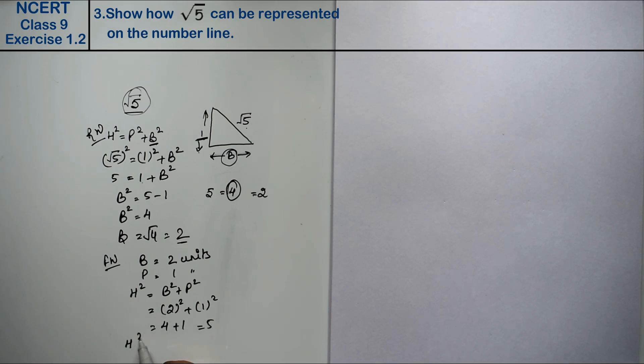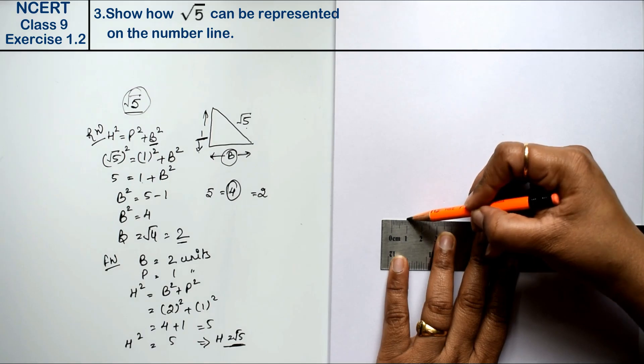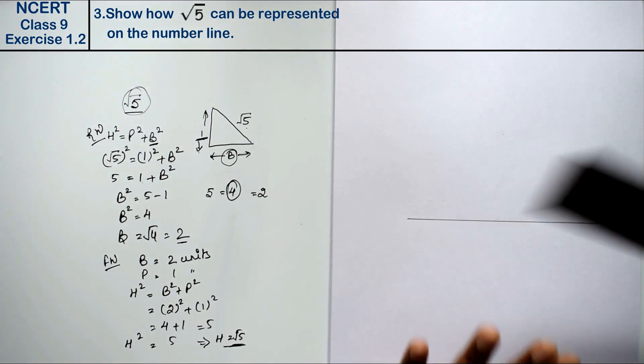Now h square equals to 5. So h equals to root 5. Now how will we plot root 5 on a number line? We will see that. Friends, first you can draw a line for number line.